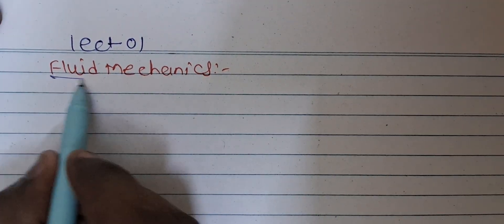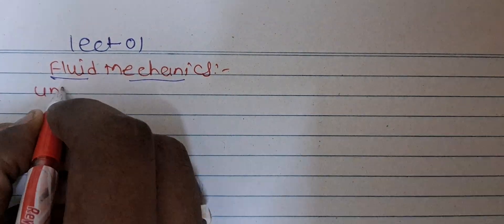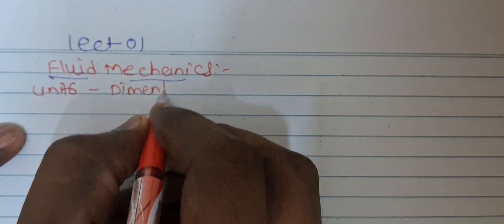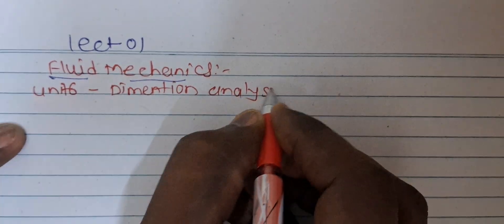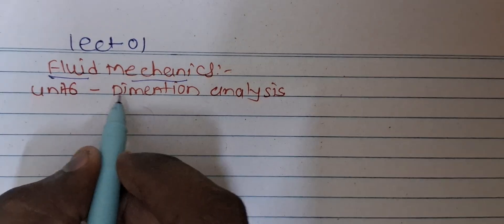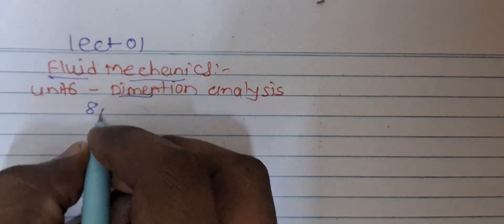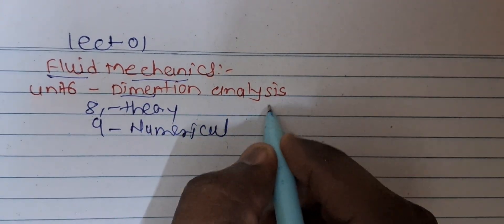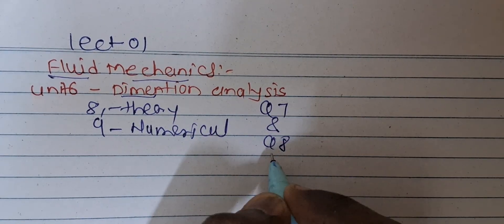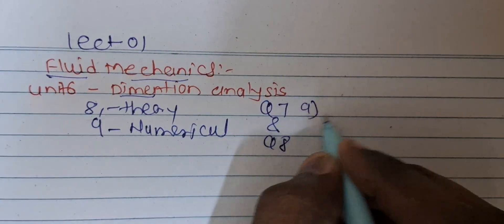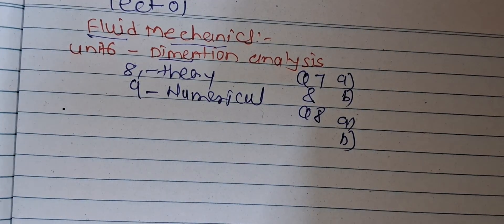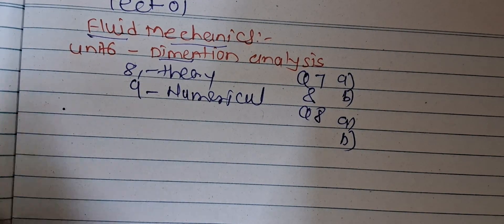This is lecture number one for fluid mechanics unit number six: Dimension Analysis. In this unit, an eight-mark theory question and nine-mark numerical are asked in both question seven and question eight — one theory and one numerical each. In the theory section, a total of five definitions are asked.